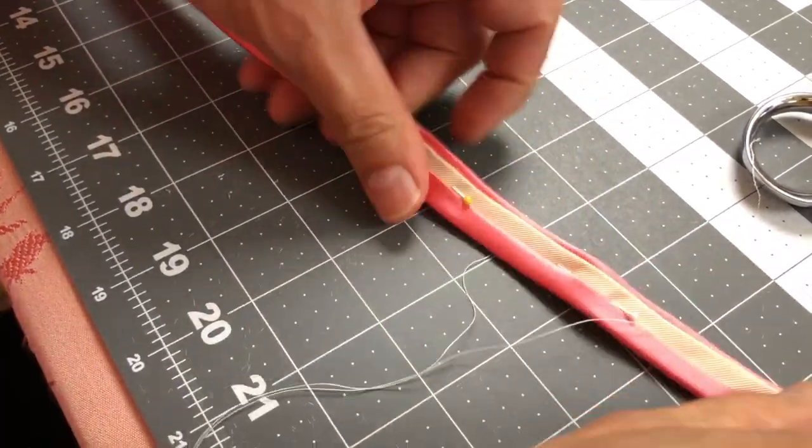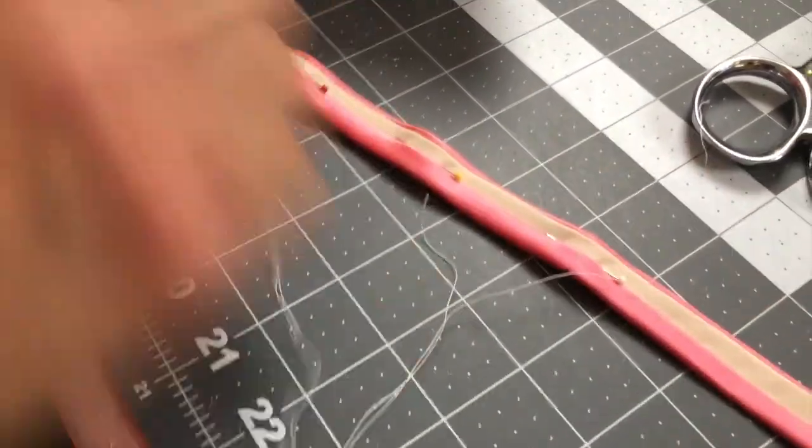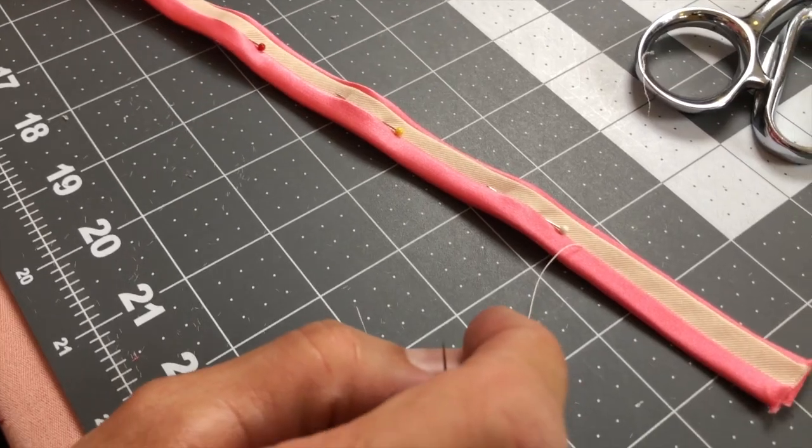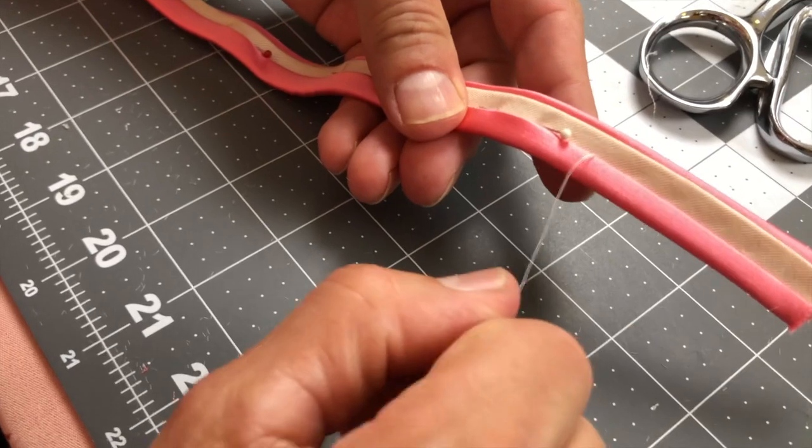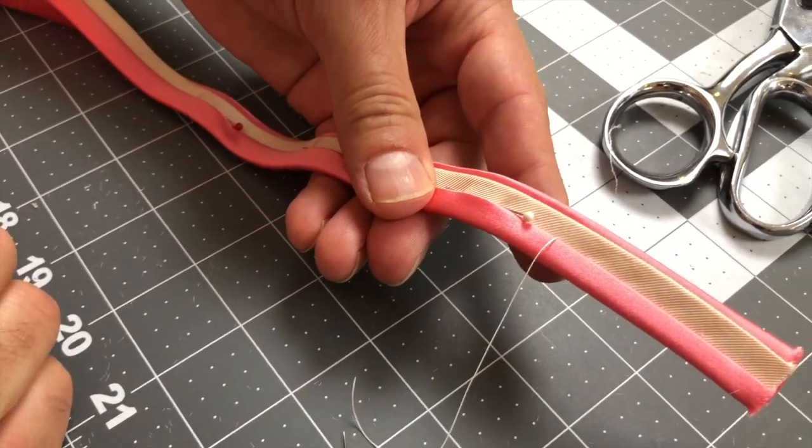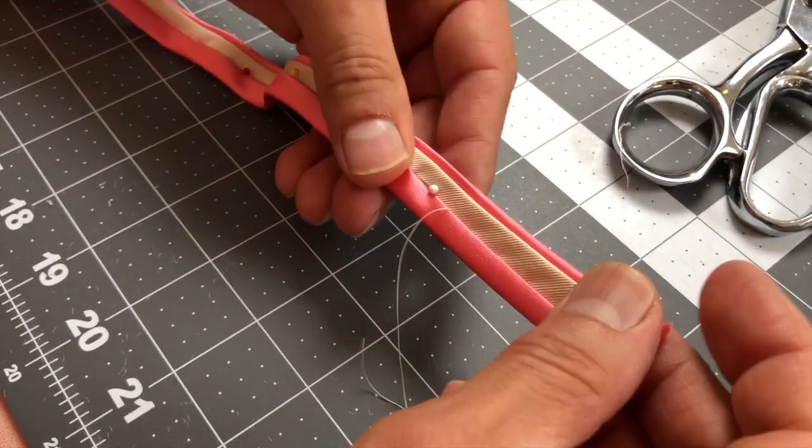And that's it. You'll do it all the way along the length, which is 26 inches. So you'll do it all the way. There's your trim. That's it.